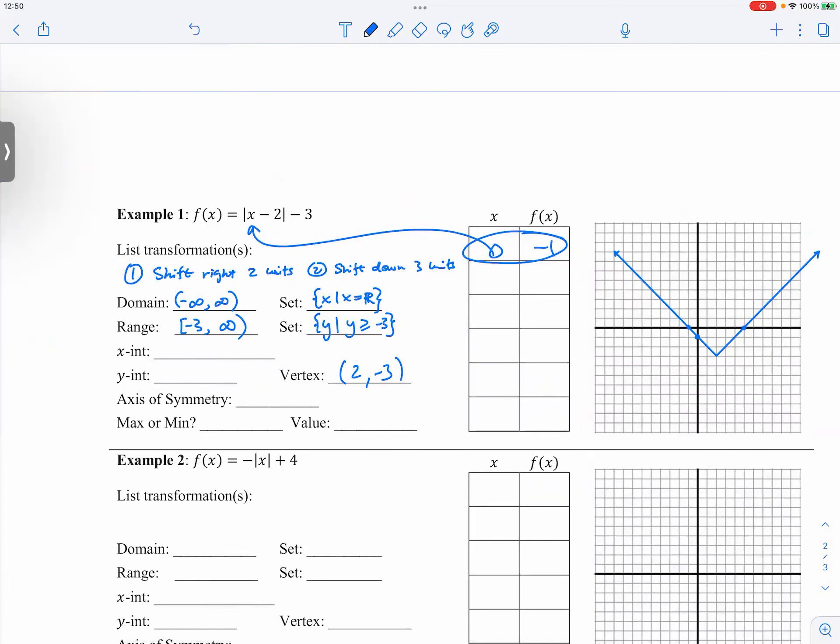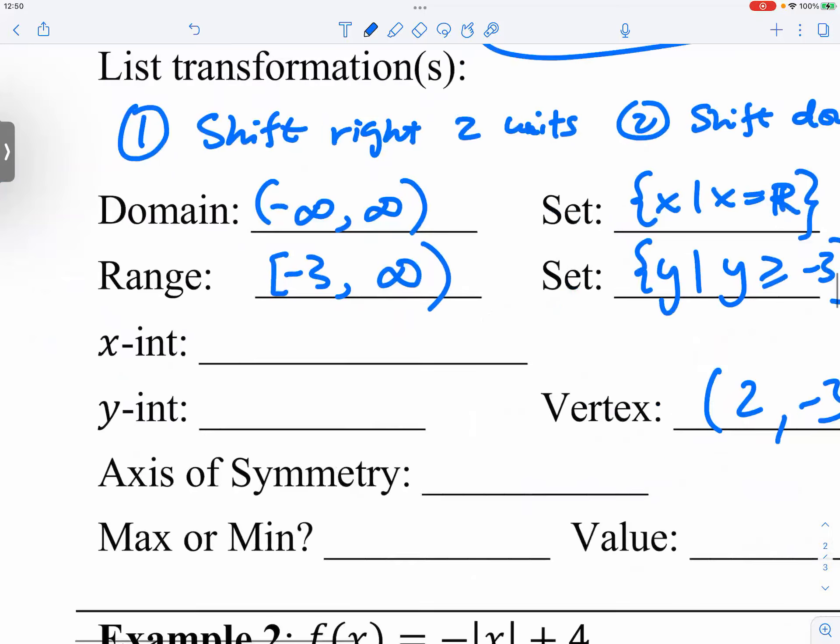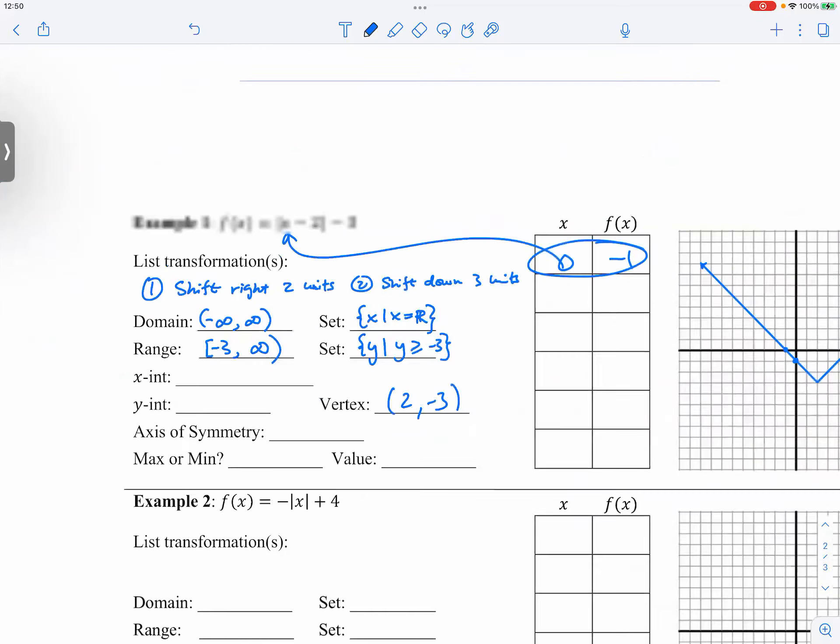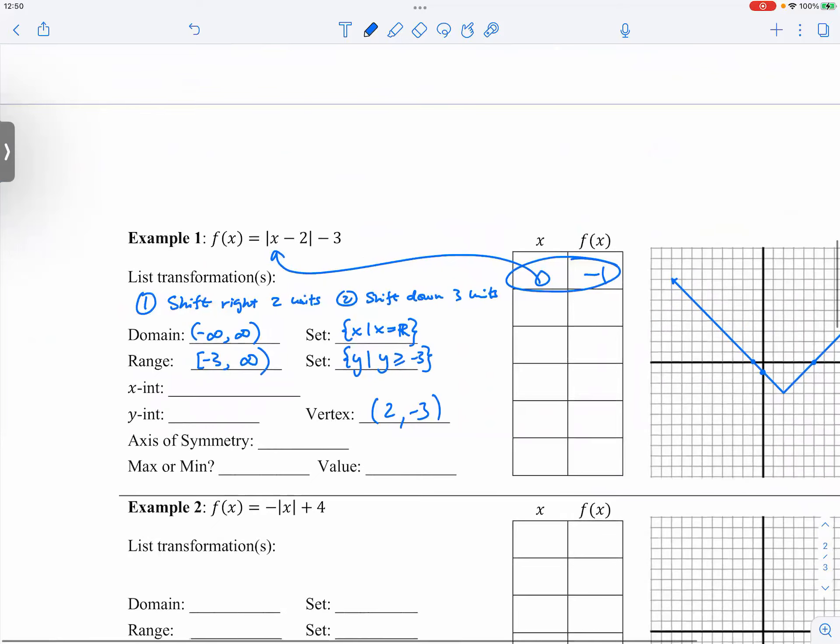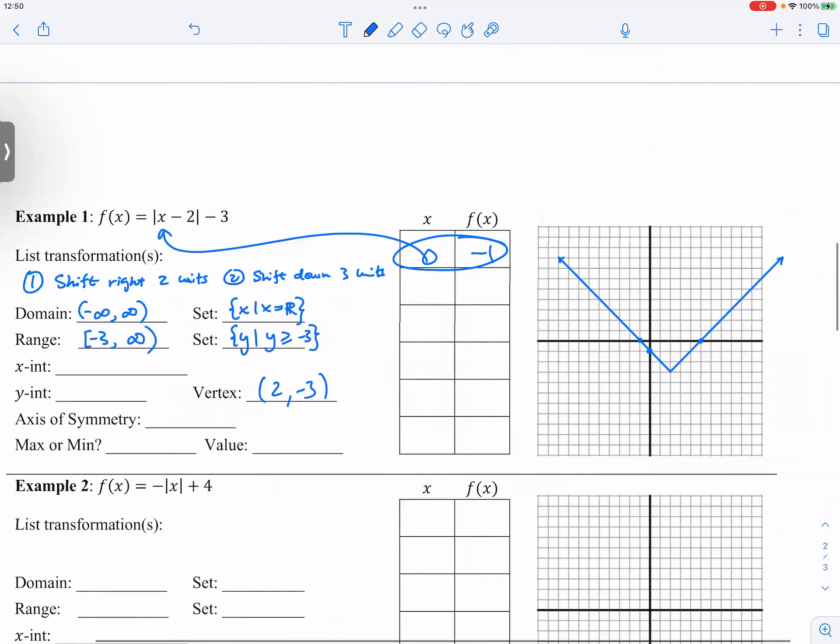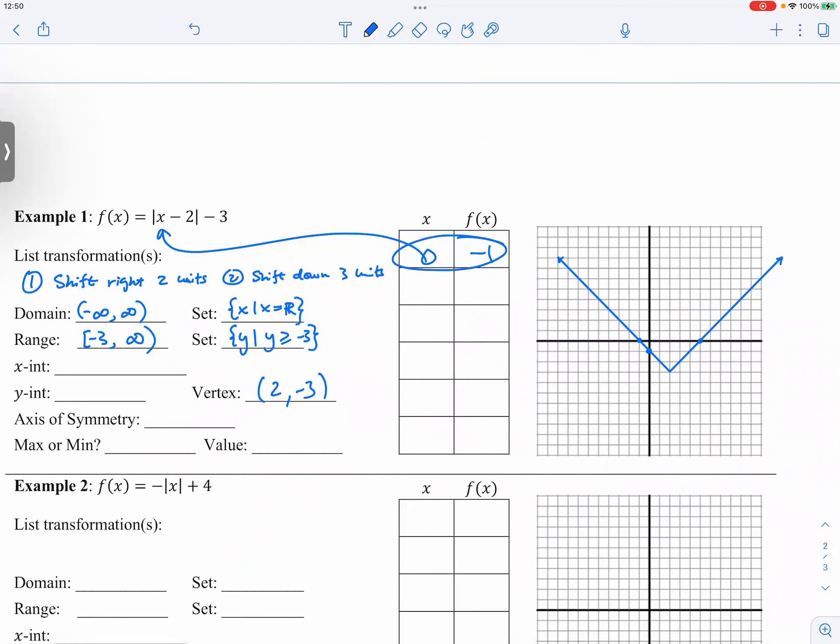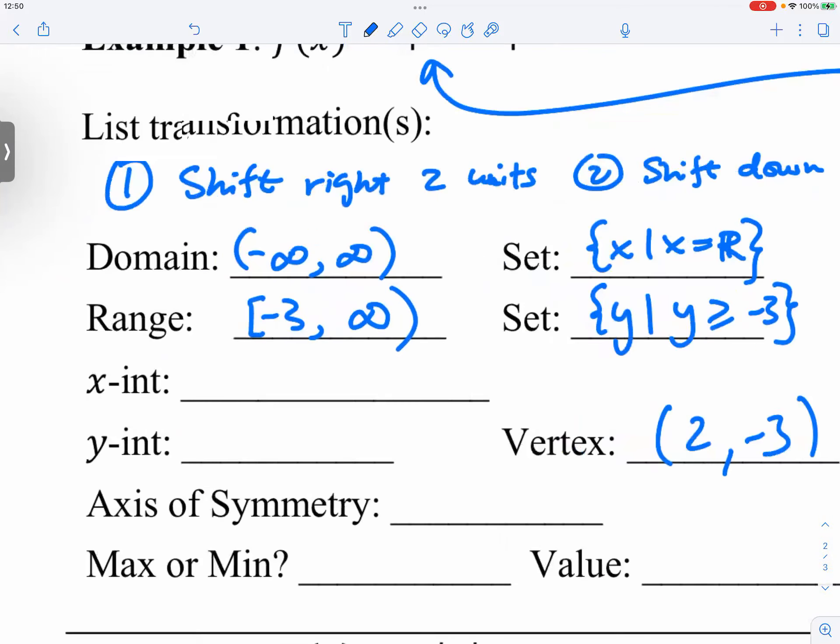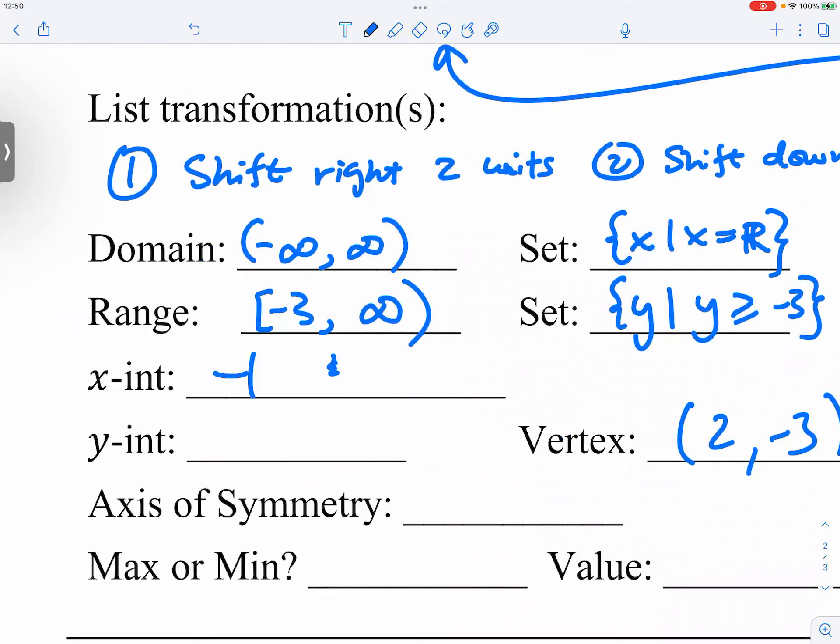So your y-intercepts, oh let me show you a wrong demonstration. Okay, wrong demonstration here is that I'm looking at the x-intercepts. Okay, it's x equals to negative one and five. Okay, so I'm going to write this down: negative one and five.